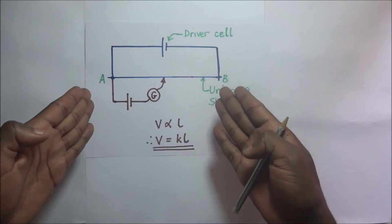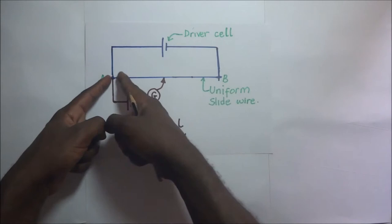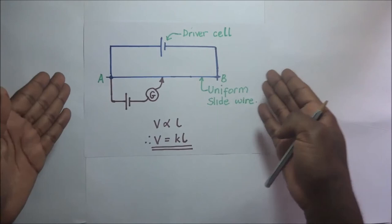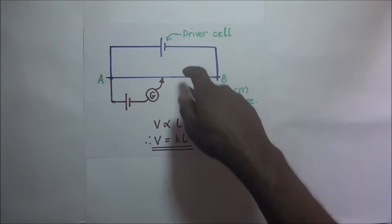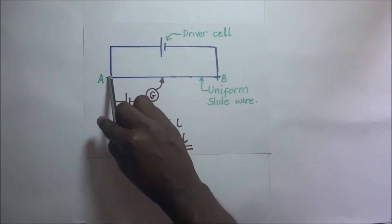It means that the potential difference across this wire is uniformly distributed all throughout the wire. And because the wire is uniform and it is having a uniform resistance per centimeter, it means that this driver cell is also going to impose a uniform pd per centimeter along that wire.